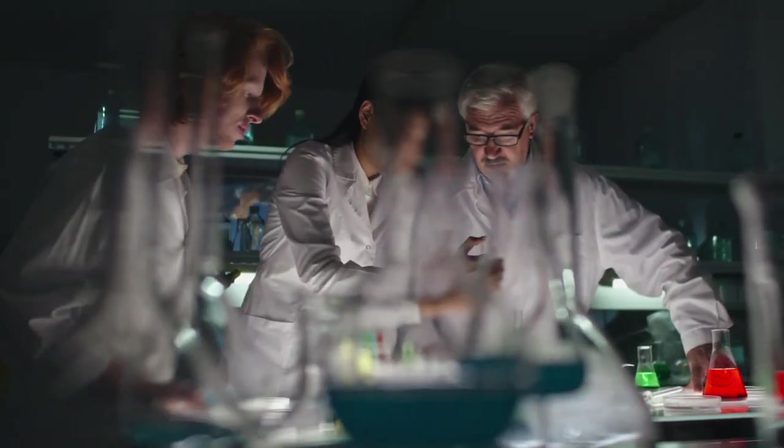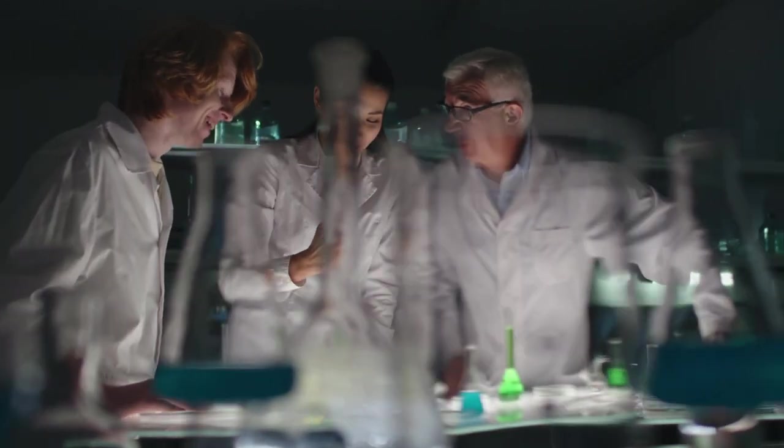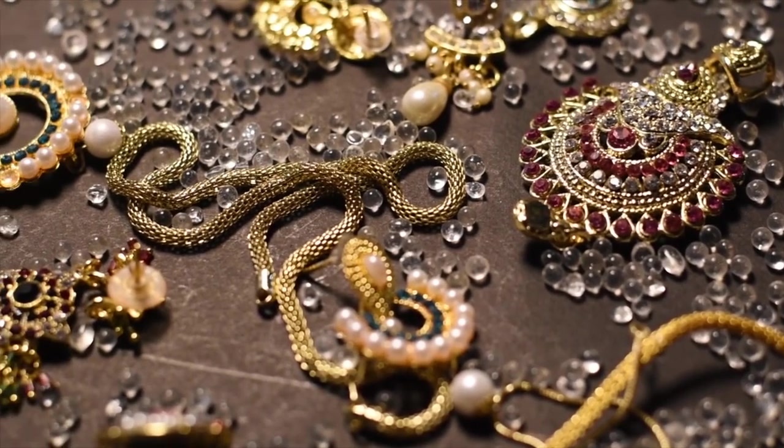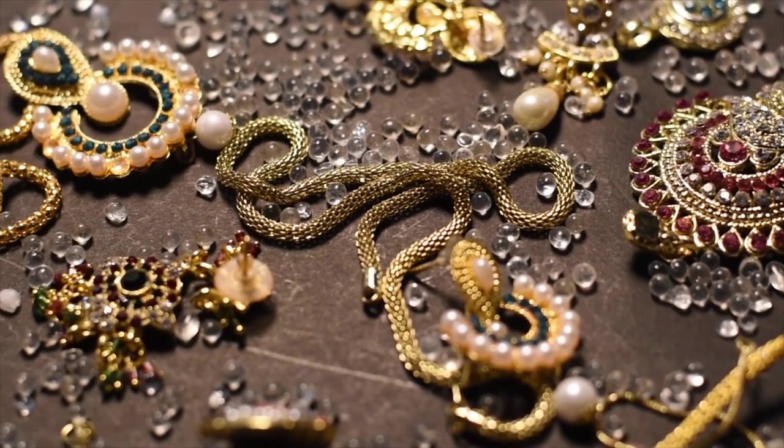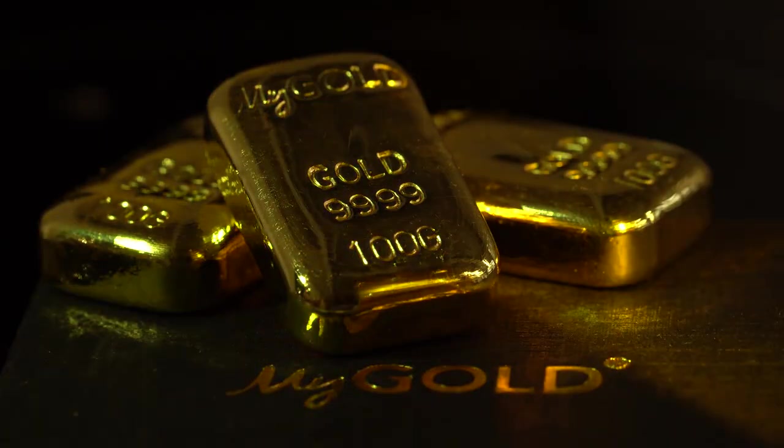It's easiest for scientists to transmute gold by bombarding the heavier element mercury and producing gold via decay. Gold cannot be produced via chemistry or alchemy. Chemical reactions cannot change the number of protons within an atom. The proton number or atomic number defines an element's identity.